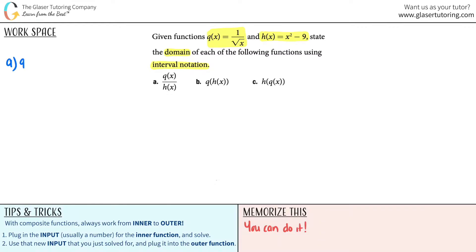So q of x divided by h of x: q of x was 1 over the square root of x, and that's all being divided by h of x, which was x squared minus 9. I'm not going to simplify this, and you shouldn't simplify functions when you're trying to find a domain, because that's when things get a little hairy and you might leave out a couple of numbers. Always do your domains from functions that you did not simplify.